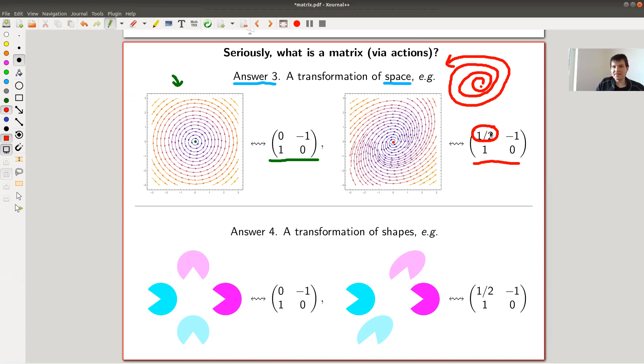And answer number four is, and that's maybe the classical answer which we will discuss in another video, it's actually an action on shapes. So it's a linear map. That's what people usually say. And how should you read this? Well, this matrix, and here you have this matrix.